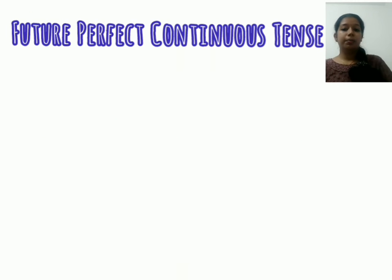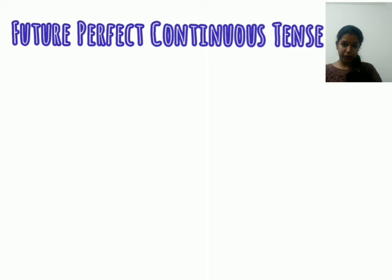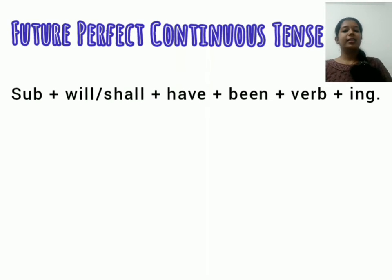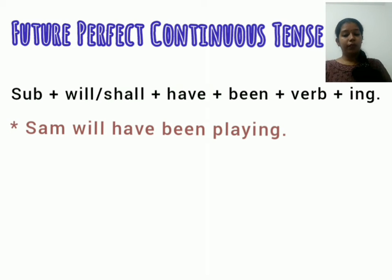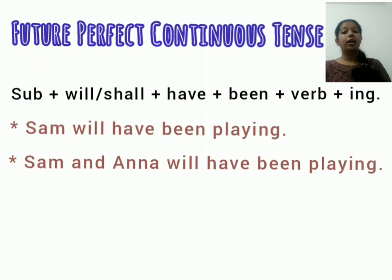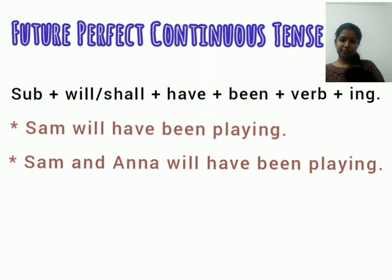For future perfect continuous, the format is: subject plus will or shall plus have plus been plus ING form of the verb. For example, Sam will have been playing, or Sam and Anna will have been playing.